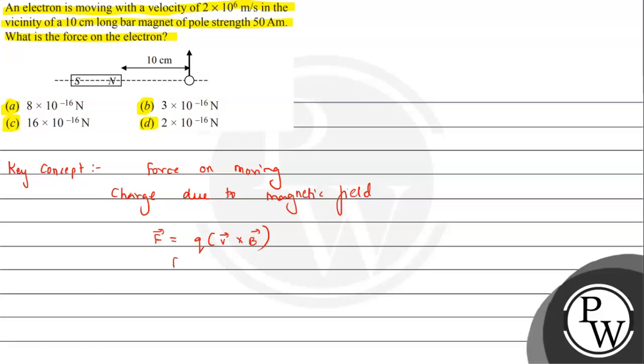And in terms of magnitude, it can be written as qVB sin θ. So this will be the magnitude of force, where θ is the angle between V and B.